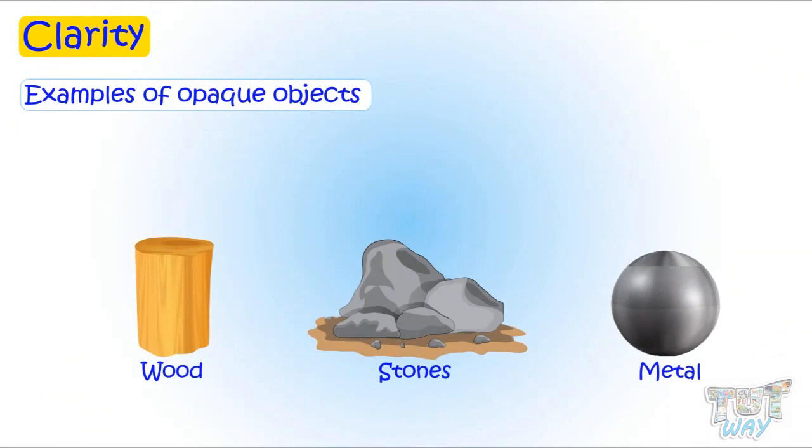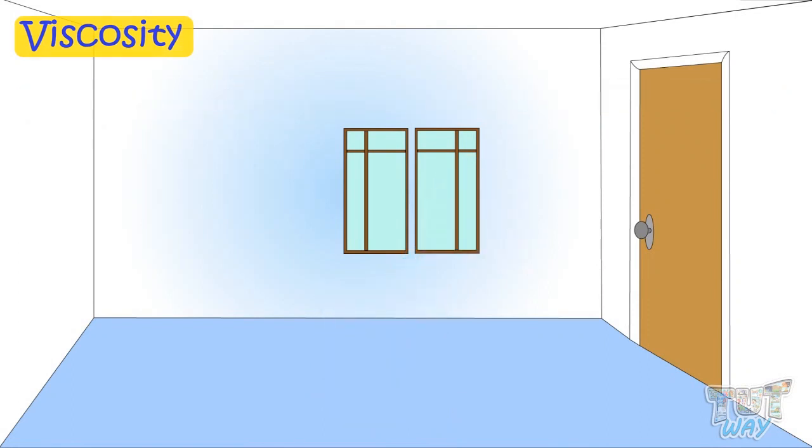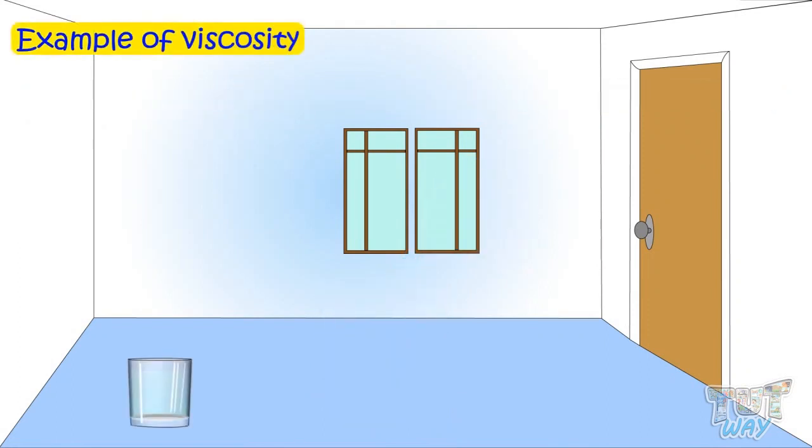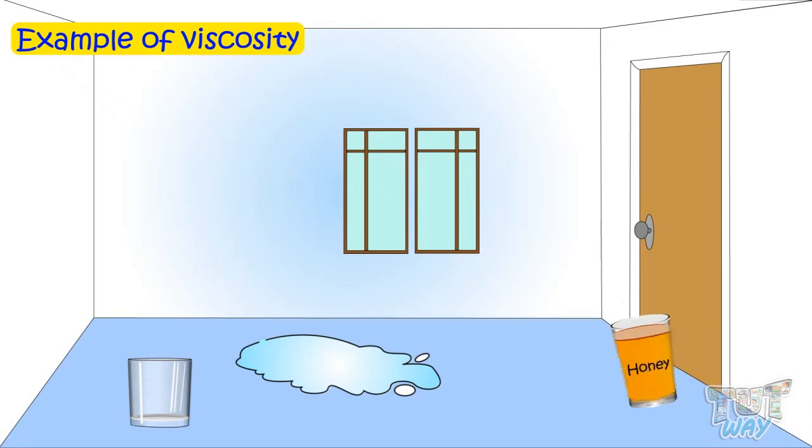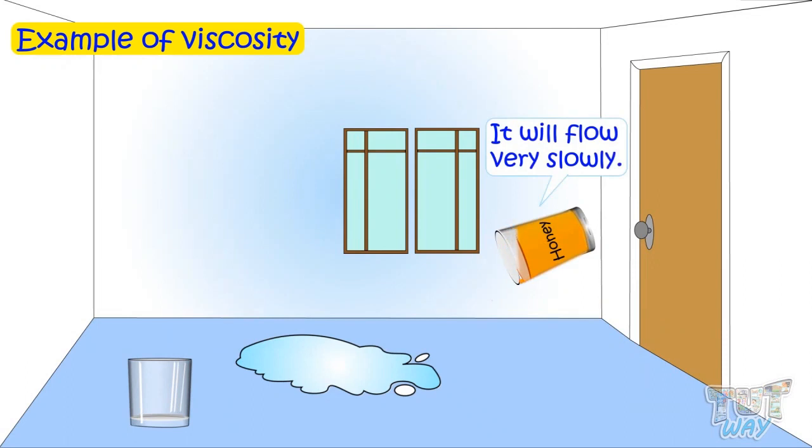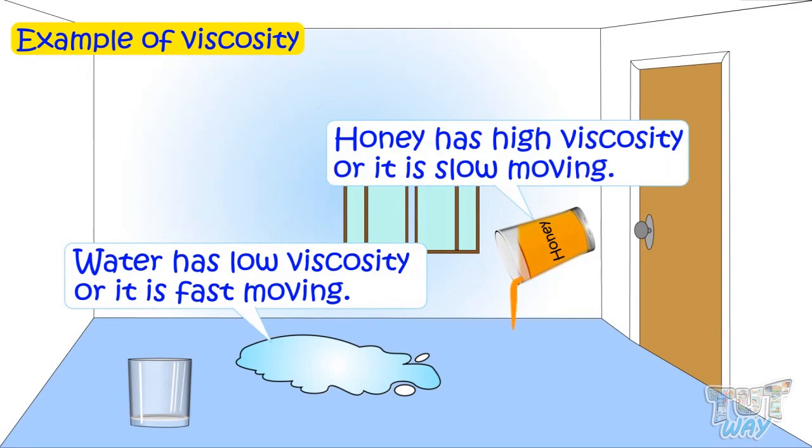Now, let's learn another property. Here we have viscosity. Viscosity is a property of fluids describing their internal resistance to flow. For example, take a glass of water and let it flow. It will flow fast. And take a glass of honey now and let it flow. It will flow very slow as compared to water. So water has low viscosity or it's fast moving, whereas honey has high viscosity or slow moving.